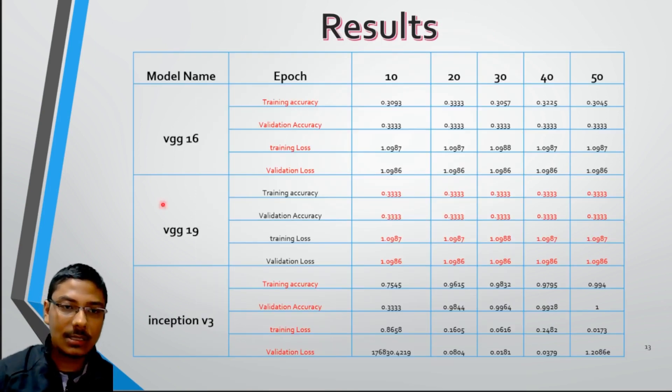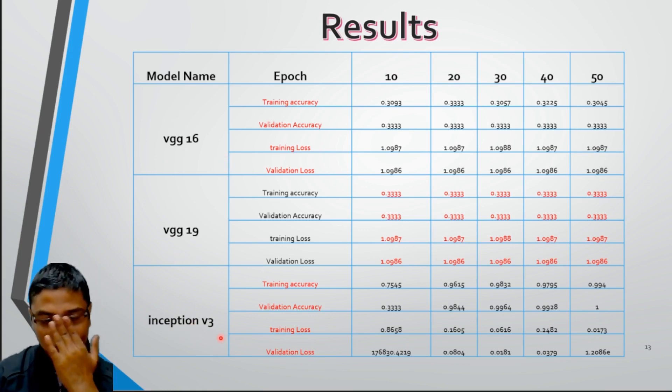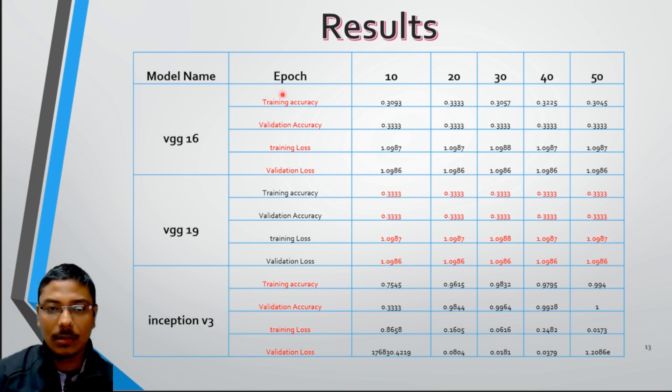Here are some models that we worked on: VGG 16, VGG 19, and Inception V3. And here is some data. In VGG 16, we got around 33% of accuracy, validation accuracy. In VGG 19 also same, 33% of accuracy. But in Inception V3, we got 100% accuracy.